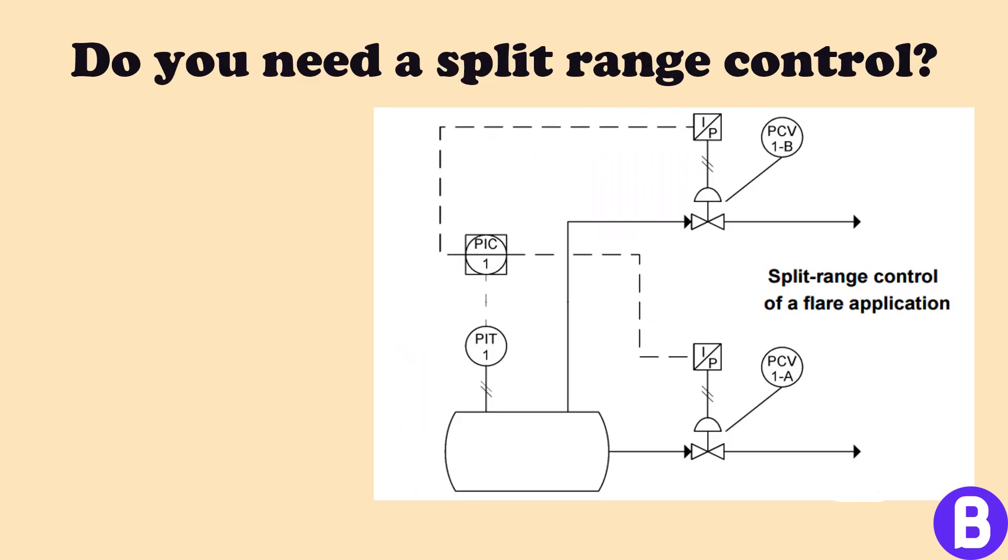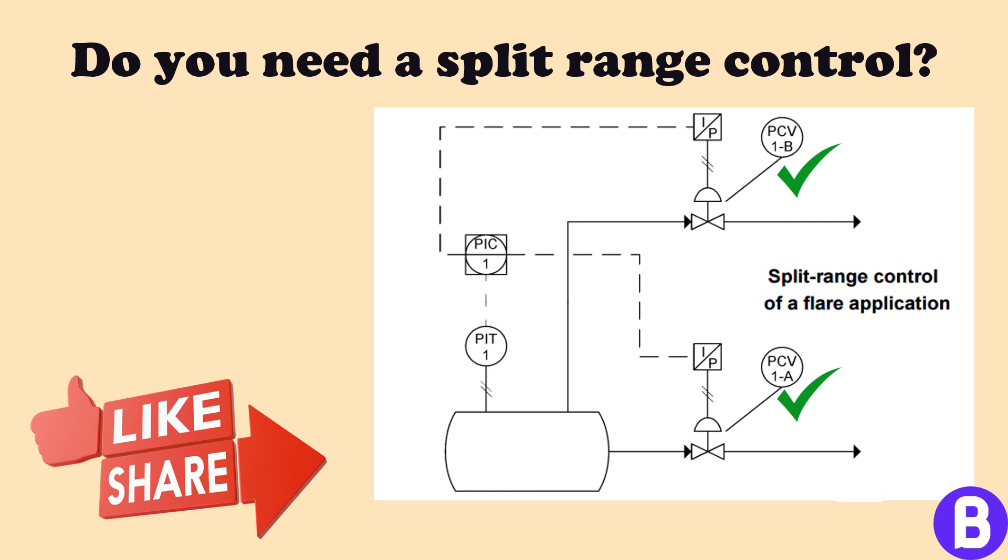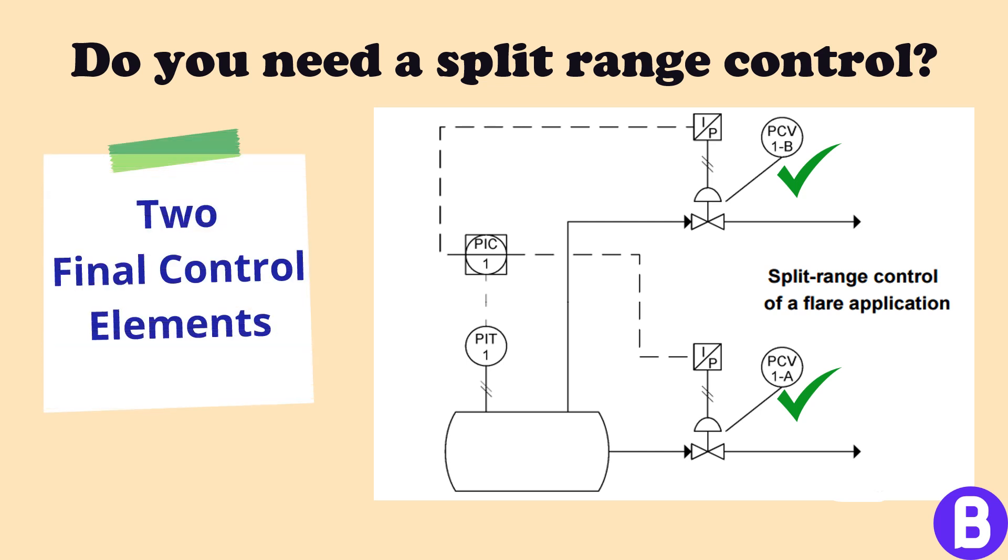In some cases, we may need more than one source to control a specific parameter. Split range control is a common example. In split range control, we control the parameter using two final control elements.